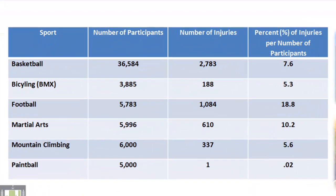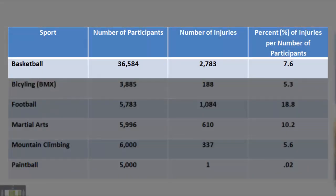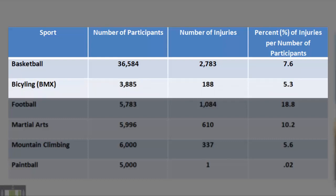Sport: Basketball. Number of participants: 36,584. Number of injuries: 2,783. Percent of injuries per number of participants: 7.6. Bicycling BMX. Number of participants: 3,885. Number of injuries: 188. Percent of injuries per number of participants: 5.3.